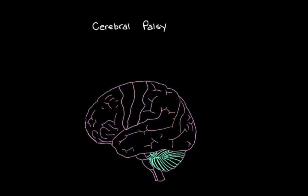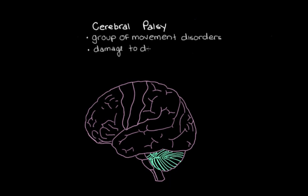Cerebral palsy is actually an umbrella term that we use to describe a group of disorders that affect a person's ability to move in a normal way. Cerebral palsy occurs because of damage to the developing brain, maybe caused by an infection or loss of oxygen for some reason. This damage usually occurs during early development, anywhere from in utero to about toddlerhood — so while the brain is still undergoing really critical development.